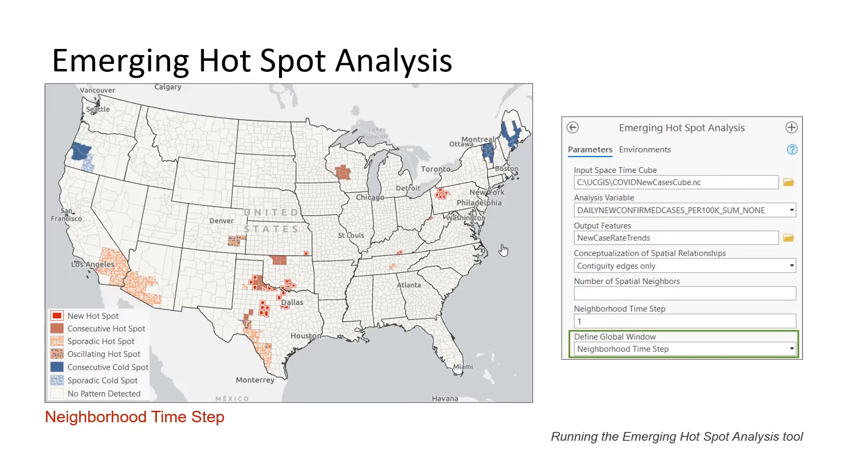The emerging hot spot analysis categories put the most focus on the last time period. Consequently, if the last time period in the county has case rates the same as everyone else, usually no trend is detected. We do see some trends here, however. Again, the new hot spots had rates similar to everyone else until the most recent phase of the outbreak, when they exceeded the average case rate. We see counties shown as sporadic hot spots, meaning they exceeded the average case rates, then matched, then exceeded, on again, off again. The consecutive cold spots had lower case rates than other counties, but only for the last several time periods.